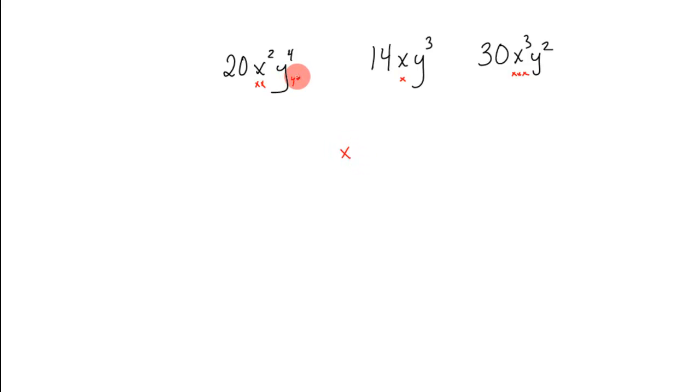The y's. There's four y's. There's three y's. And there are two y's. How many are in common? There are two, two, and two. So there are two y's in common. So y times y is y squared.